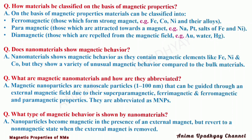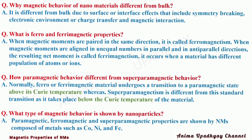What type of magnetic behavior is shown by nanomaterials? Nanoparticles become magnetic in the presence of an external magnet, but they revert to a non-magnetic state when the external magnet is removed. Why is the magnetic behavior of nanomaterials different from their bulk counterpart? It is different from bulk due to surface or interface effects that include symmetry breaking, electronic environment or charge transfer, and magnetic interaction.